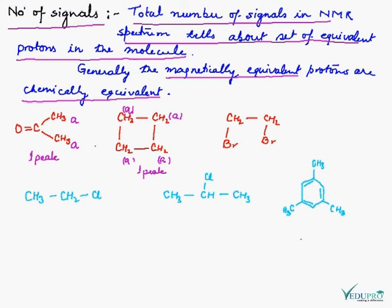The total area of this proton set is eight protons. If we look at this case, this is the environment of this proton, so here is one peak, and the area of this proton is four protons.